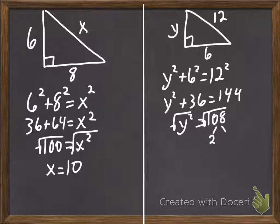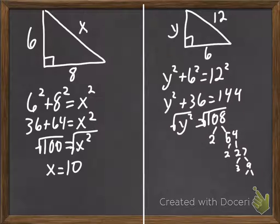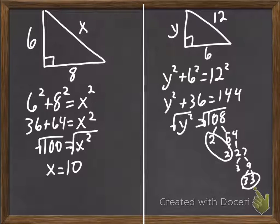Let's try 2 and we get 54. We can do 2 again and we get 2 and 27. 27 is 3 and 9. We get 3 and 3. Pair of 3's, pair of 2's. So, y equals 6 square root 3.